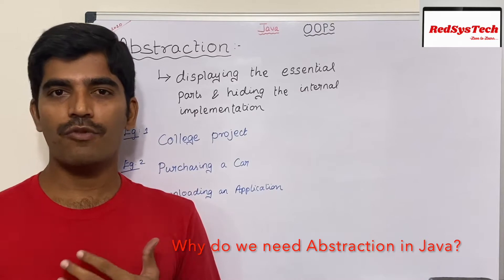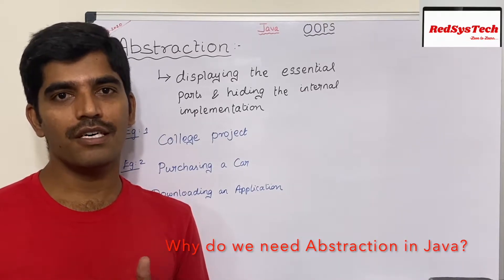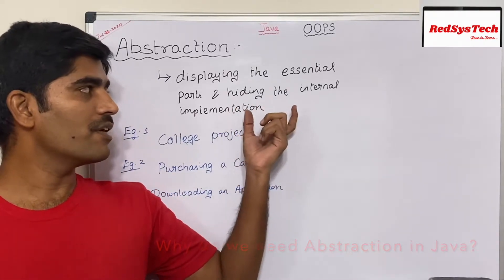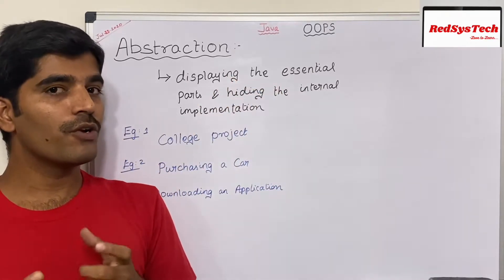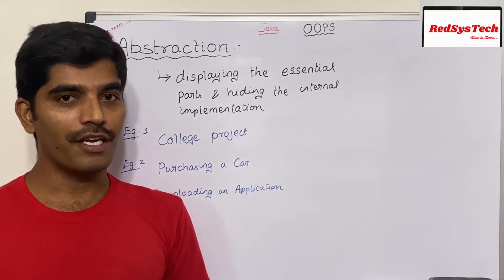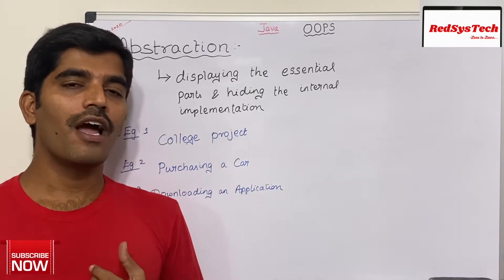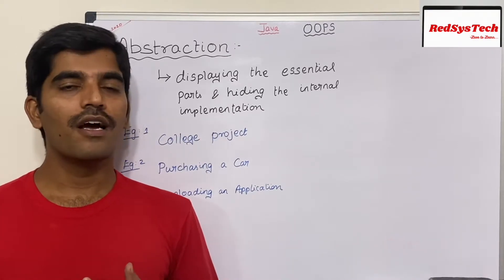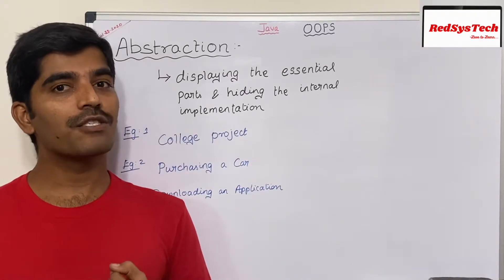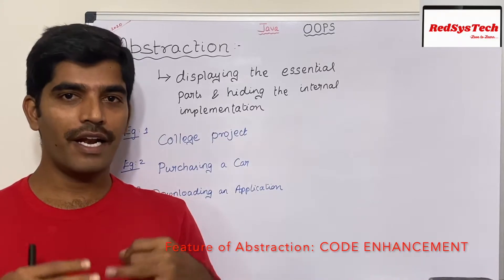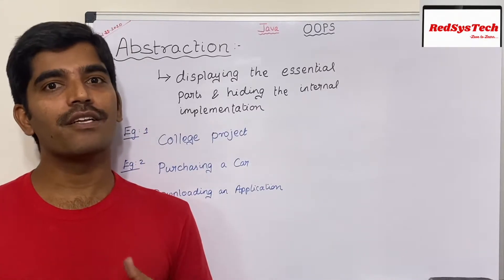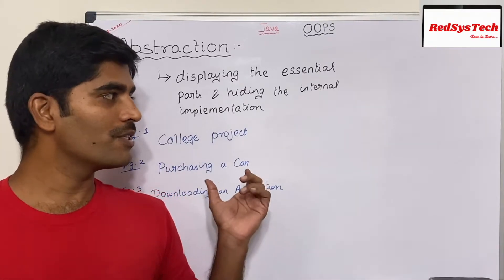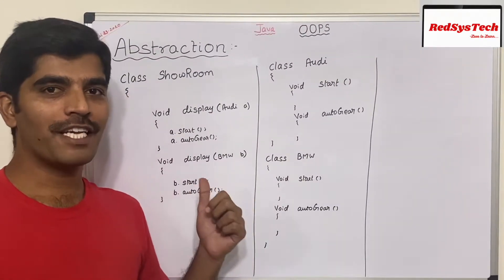Now, why do we need abstraction in Java? Say tomorrow the technology varies — different frameworks come to market, and if the company wants to implement in a different framework or language, the end user should not get impacted. The internal implementation might change but the customer will only know the external services the product offers. Also, abstraction gives security to the code because no one knows how it's actually implemented. The second benefit is code enhancement, and the third is code maintainability, which is the most challenging aspect in any big project.